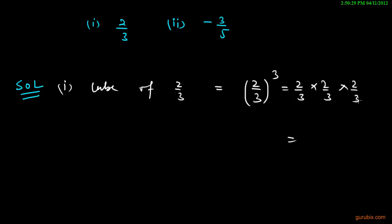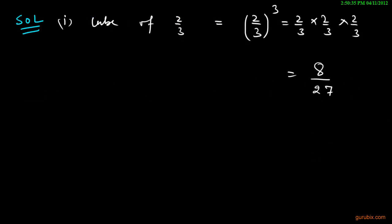This means 8 over 27. And now we have to calculate the cube of negative 3 over 5.